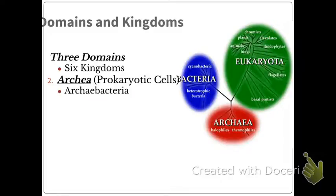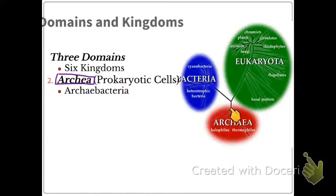These are made up of prokaryotic cells. We call bacteria that exist in the domain archaea 'archaebacteria.' So the kingdom is archaebacteria, the domain is archaea. What we find in the archaea domain are more of our extreme bacteria that live in salty or really hot places.